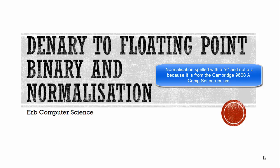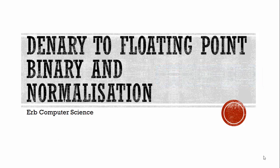In this video, we're going to take a look at converting decimal numbers to floating point binary and also normalizing that. We're really going to do three things: go from decimal to fixed point binary, and then change our fixed point binary to floating point binary while normalizing it at the same time.